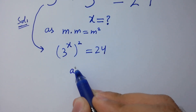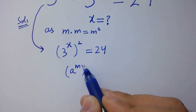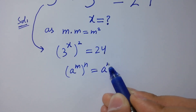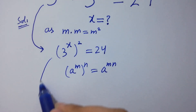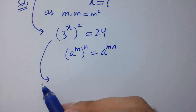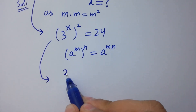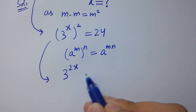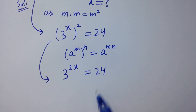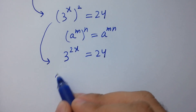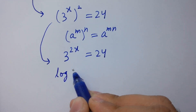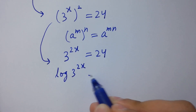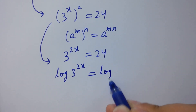Using the rule a to the power m, to the whole power n, equals a to the power mn, it will be 3 to the power 2x equal to 24. Now take log on both sides: log of 3 to the power 2x equals log 24.